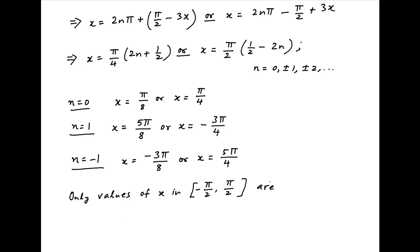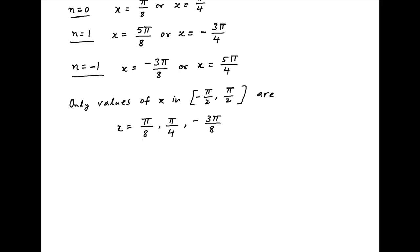Therefore, the only values of x in the interval −π/2 to π/2 are x = π/8, π/4, and −3π/8. The corresponding values of y are cos(π/8), cos(π/4) = 1/√2, and cos(−3π/8), which equals cos(3π/8).